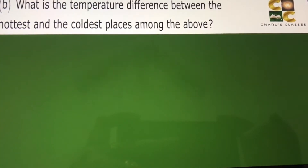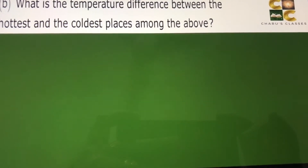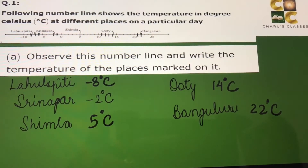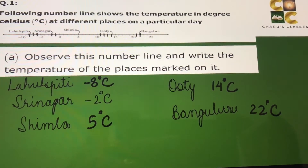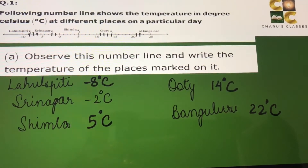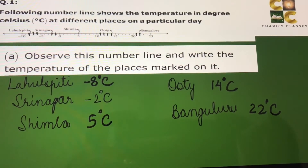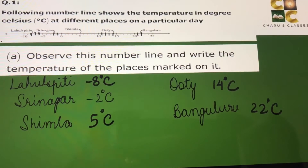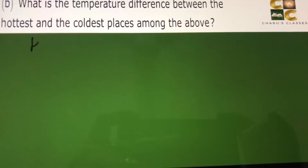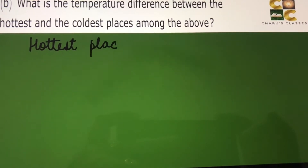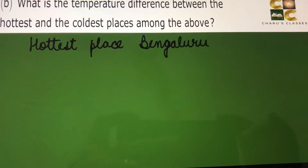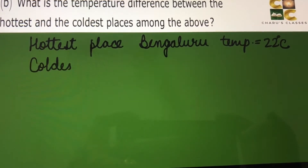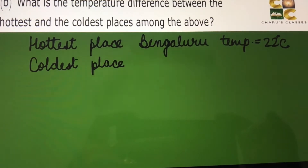Part B: What is the temperature difference between the hottest and the coldest places among the above? The hottest place is the one with the maximum temperature. Looking at all the temperatures, Bangalore has the highest temperature and minus 8 degrees Celsius, that is Lahulspiti, has the minimum temperature. So the hottest place is Bangalore with 22 degrees Celsius, and the coldest place is Lahulspiti.